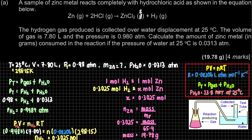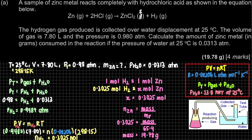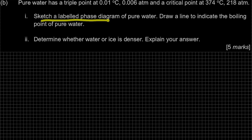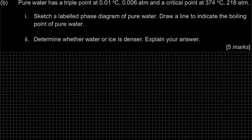Moving on to Question B. Pure water has a triple point at 0.01°C and 0.006 atm, and a critical point at 374°C and 218 atm. Part one asks to sketch a labelled phase diagram of pure water and draw a line to indicate the boiling point. There are two sub-parts to this question.